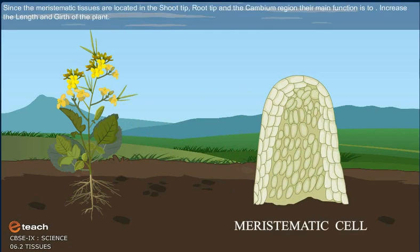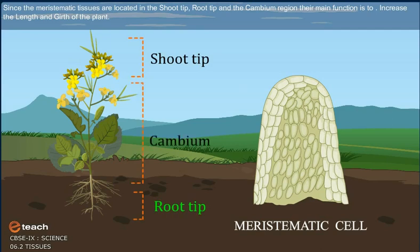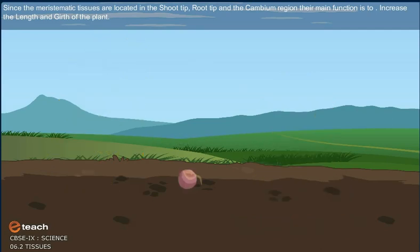Since the meristematic tissues are located in the shoot tip, root tip, and the cambium region, their main function is to increase the length and girth of the plant.